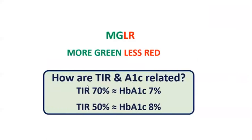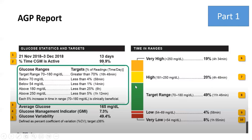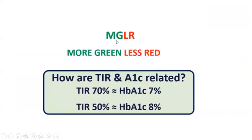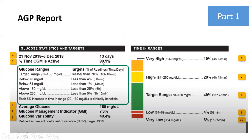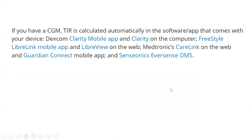TIR of 70% is approximately equal to HbA1c of 7%, and TIR of 50% is approximately equal to HbA1c of 8%. The goal is more green and less red — remember MGLR. Time in range is calculated automatically in the software app of your device. For Dexcom it's the Dexcom Clarity mobile app; for Freestyle Libre it's the LibreLink mobile app and LibreView on the web; for Medtronic it's CareLink on the web and the Guardian Connect mobile app; for Sensionics it's the Eversense DMS.